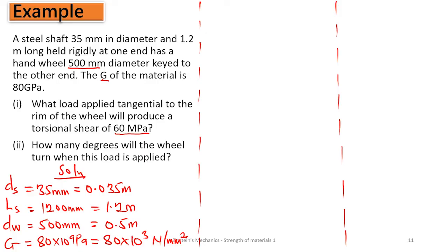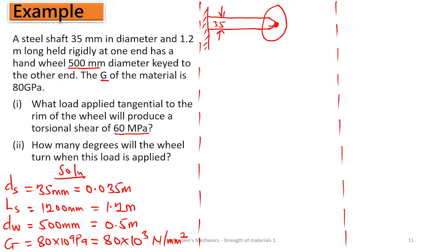We have a bar which is fixed at one end, and keyed to a circular wheel at the other end. The shaft diameter is 35 mm, the length is 1.2 m, and the diameter of the wheel is 500 mm. All the dimensions are given.